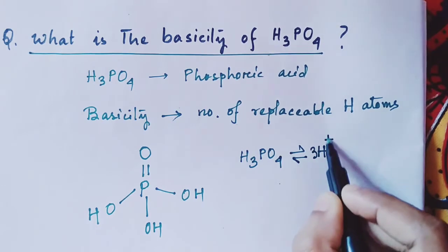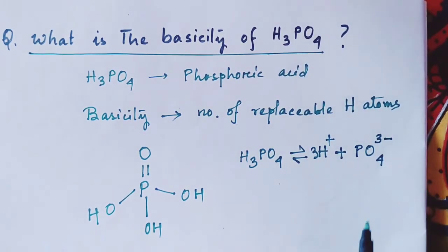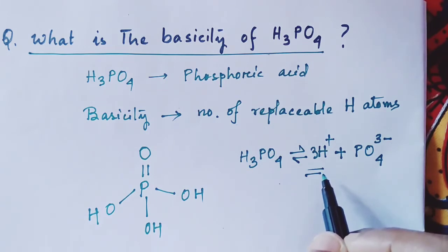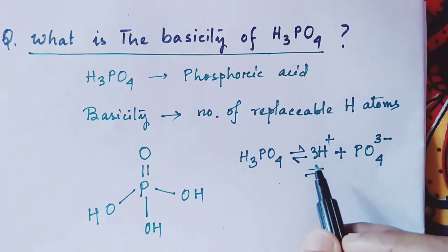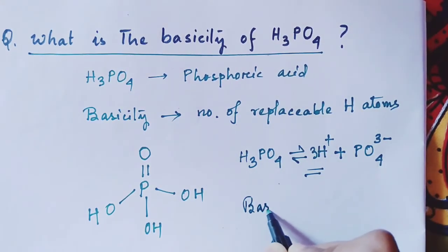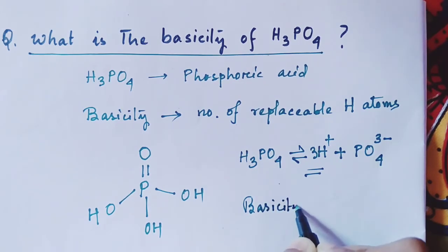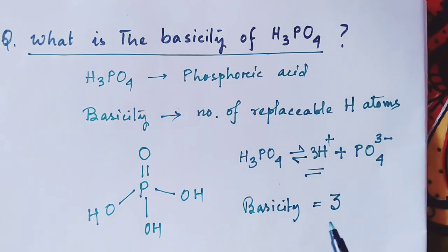H3PO4 gives 3H+ + PO4³⁻. So you can say from the phosphoric acid 3H+ ions are produced. So the basicity is 3 for this phosphoric acid. Thank you.